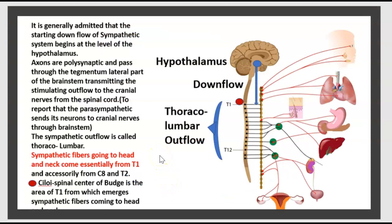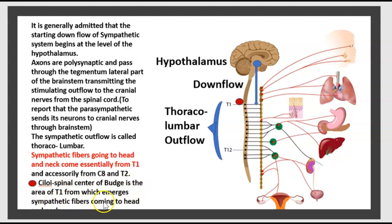This is a review of the sympathetic nervous system. It is generally admitted that the descending outflow of the sympathetic system begins at the level of the hypothalamus. Axons are polysynaptic and pass through the lateral tegmentum of the brainstem, transmitting stimulation outflow to the spinal cord. The sympathetic outflow is called thoracolumbar. Sympathetic fibers going to the head and neck come essentially from T1, ascending from C8 and T2. The cilio-spinal center of Budge is the area of T1 from which sympathetic fibers travel to the head.